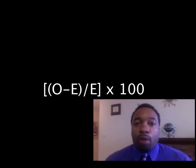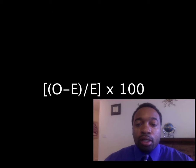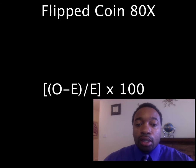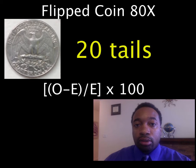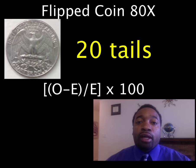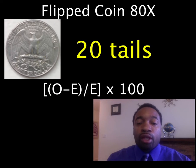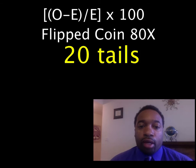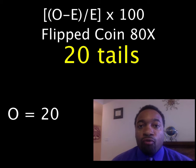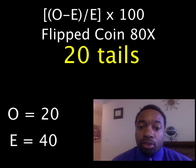Now why don't you try a problem? Let's change the numbers a bit. Let's say you're still flipping the coin and you flipped 80 times and you got 20 tails. What is the percent error for tails? Pause the video, think about the answer, and unpause it when you're ready to discuss it. If you did the math correctly, you should have 20 for your observed and 40 for your expected, because you expected 40 heads and 40 tails.